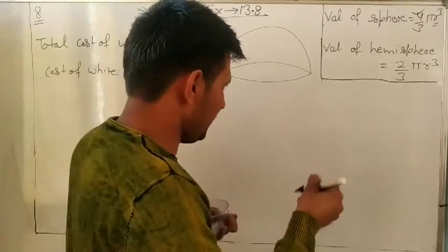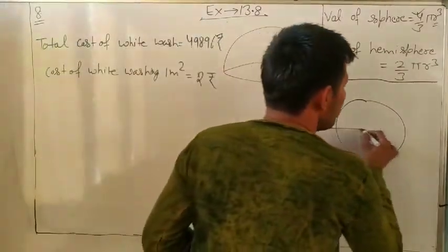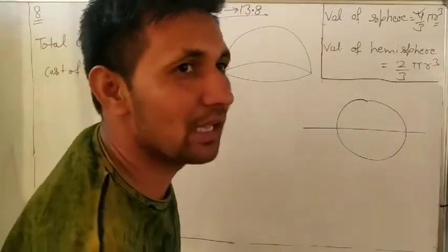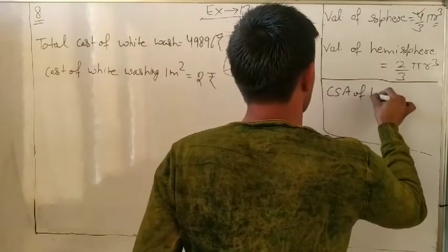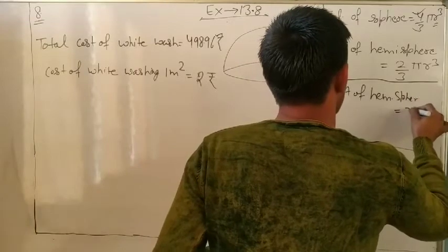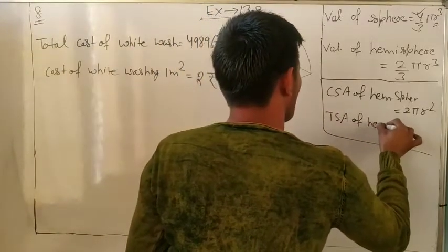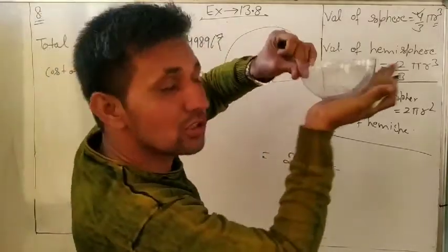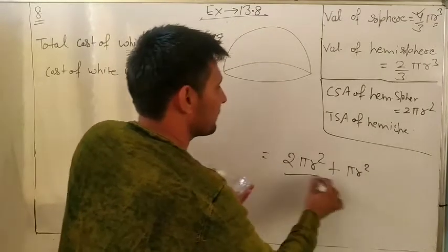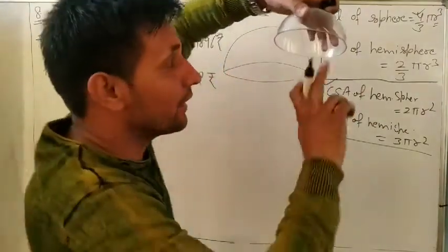For a full sphere, the curved surface area is 4πr². Dividing into two equal parts gives 2πr², so the CSA of a hemisphere is 2πr². The total surface area of a hemisphere is lateral plus base: 2πr² + πr² = 3πr². Since we are whitewashing inside the dome, we use the curved surface area, which is 2πr².